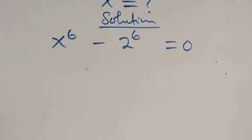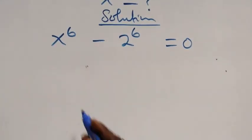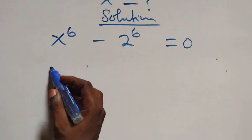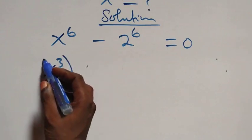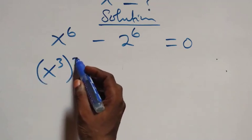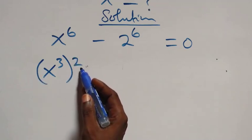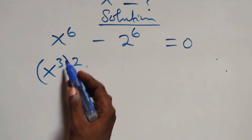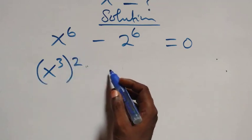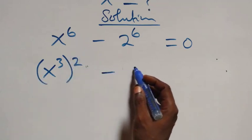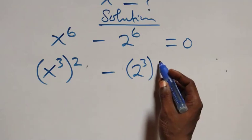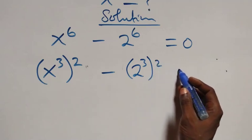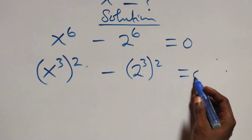The next step, we can write this as x raised to power 3, then raised to power 2 — since 2 times 3 gives 6 — then minus 2 raised to power 3, then raised to power 2, equals zero.